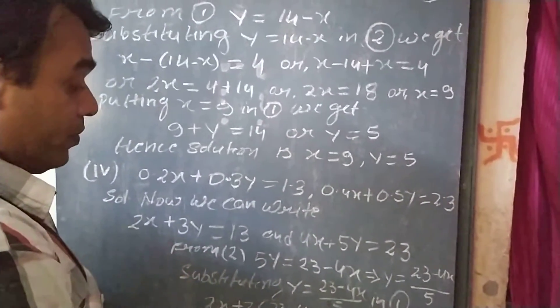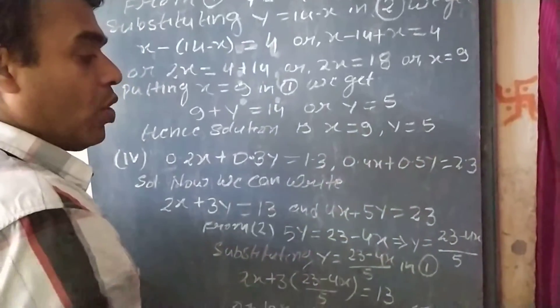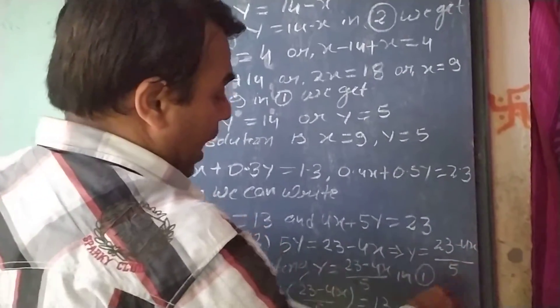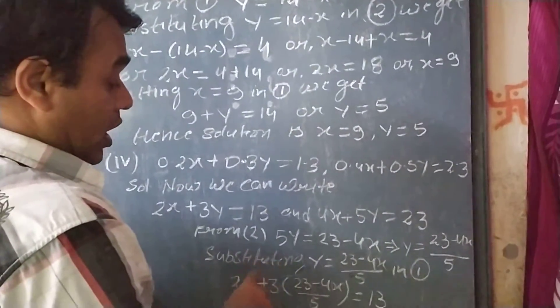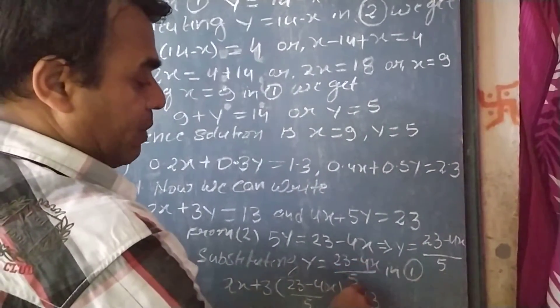From equation 2, 5y equal to 23 minus 4x, or y equal to (23 minus 4x) by 5. So, substituting y equal to (23 minus 4x) by 5 in equation 1.